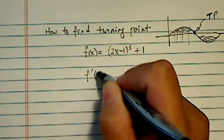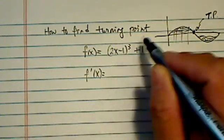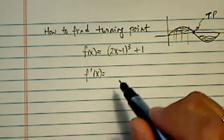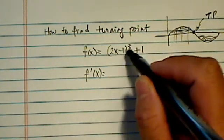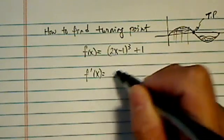Alright, the way to find turning point is we have to take derivative. It's actually the second derivative when we set it to zero. Let's proceed doing that.